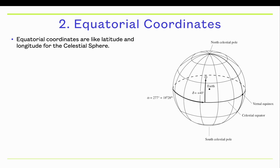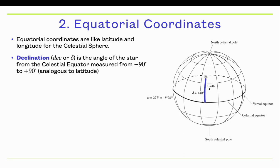The second coordinate system is called equatorial coordinates, and this system is mapped to the celestial sphere. So this one is relative to the stars themselves, not to your local position on the Earth. Equatorial coordinates are like latitude and longitude, but on the celestial sphere instead of on the Earth. Declination is the equivalent of latitude — it's usually given by DEC or the Greek letter delta — and it's measured from the celestial equator, which is the great circle on the celestial sphere directly above the Earth's equator.